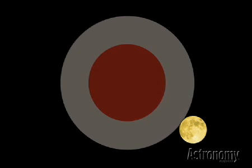In this slide sequence, we see three things. The rust-colored inner circle represents the darkest part of earth's shadow, called the umbra. The outer gray circle is the lighter part of earth's shadow, the penumbra. And the yellow-white object is the moon.